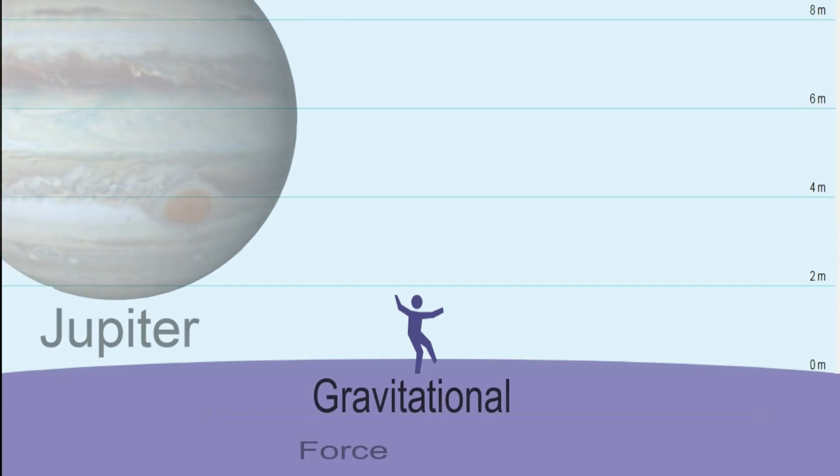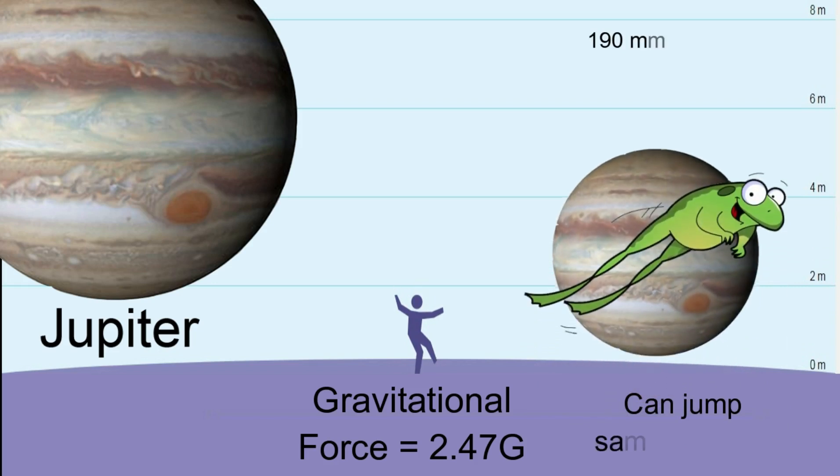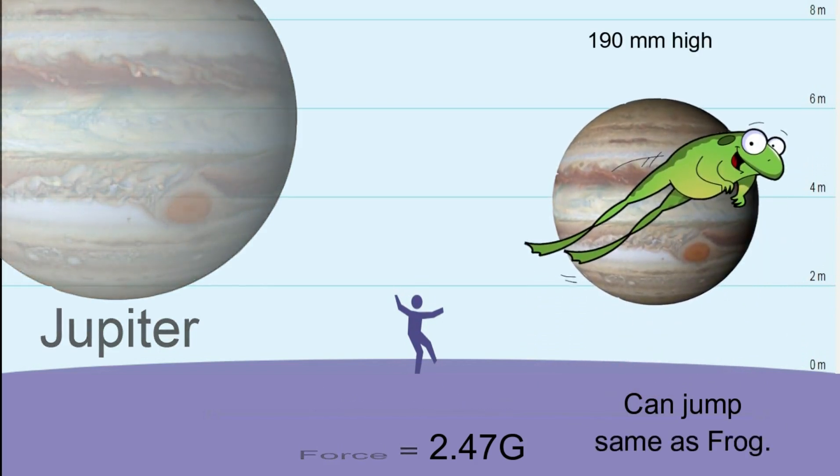Jupiter: It is the largest planet in the solar system. The mass of Jupiter is 318 times higher than the Earth. The gravitational force on Jupiter is 2.5 times higher than the Earth, which allows us to jump as high as a frog only.